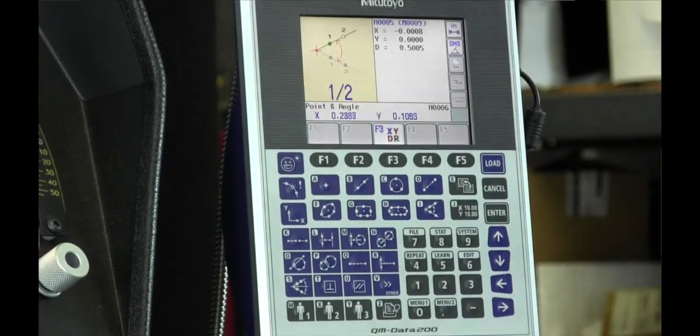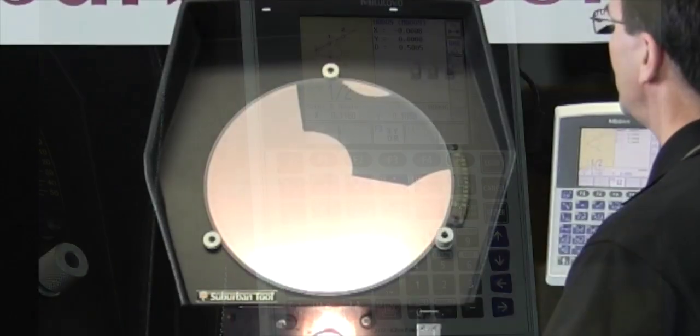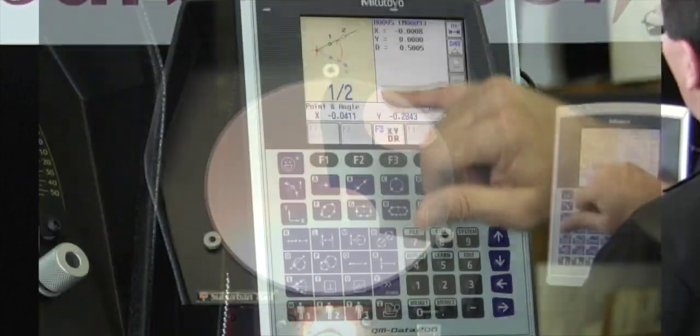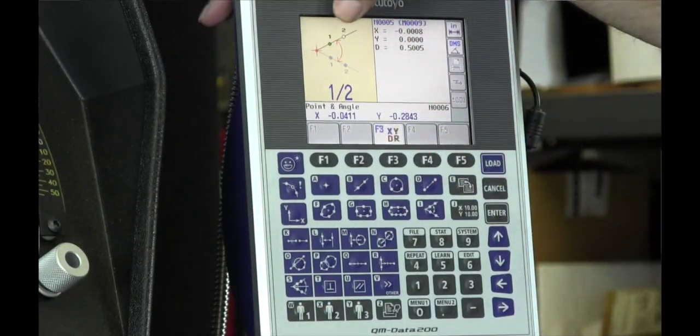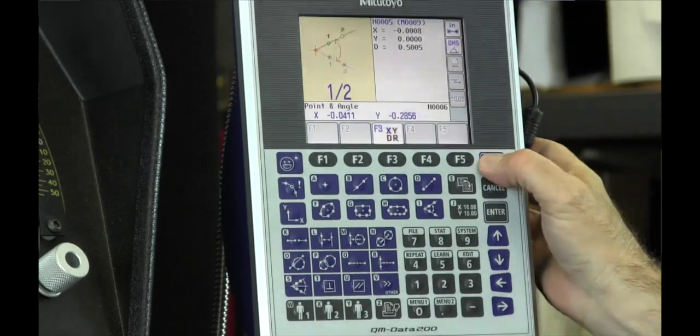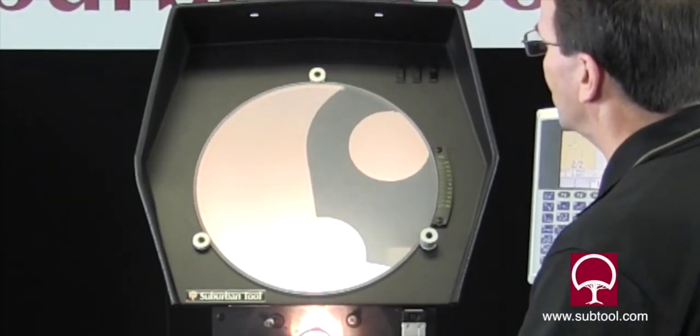Side one is done. So now we're going to come over and do side two. This has a handy little feature here. It highlights the next point you need to select in green, so you know where you should be going to get your measurement.